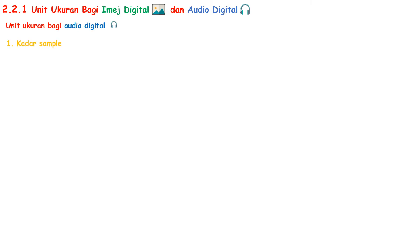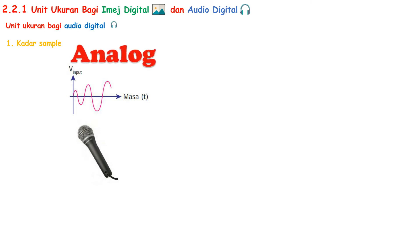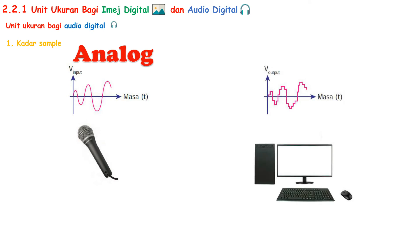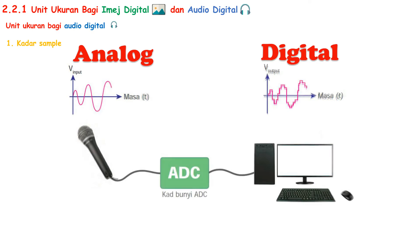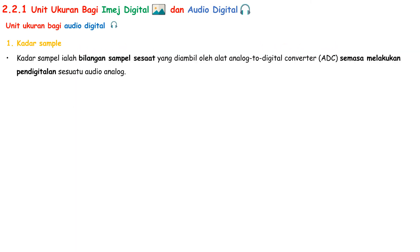After going through all the unit ukuran for image digital, it is time for unit ukuran audio digital. There are two unit ukuran for audio digital. First, kadar sample. The sound in our daily life — like talking, singing, playing piano, guitar — is in analog form. But a computer can only understand digital form, which is zero and one. So an analog-to-digital converter, ADC, transforms analog to digital form. Kadar sample is the number of samples per second taken by an ADC while digitizing an analog audio.